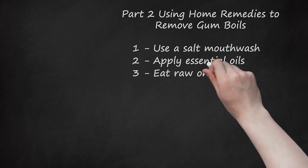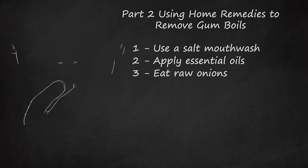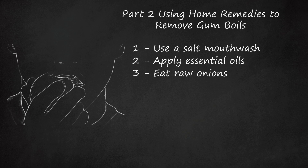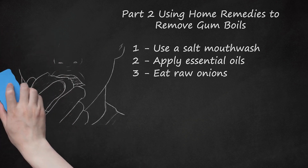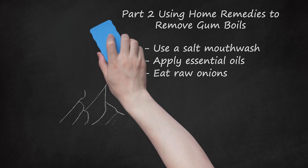Eat Raw Onions. Consuming raw onions can be a very effective home remedy for treating gumboils. Onions contain relatively high levels of sulfur, which can help heat up and dry up existing boils in your mouth. This is a home remedy and may be less effective than other solutions that have been verified by medical professionals. If you don't like the taste of raw onions, try eating them on other things like in salads or on sandwiches where the flavor is masked. Don't cook the onions, as this can reduce the amount of sulfur present in the vegetable.